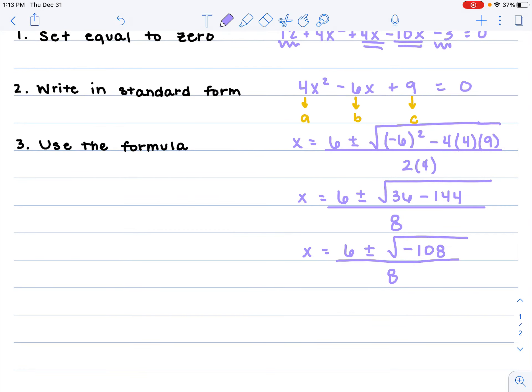Now we need to simplify that negative 108. So I'm going to bring that over here. Negative 108. Looking for the biggest perfect square that goes into -108. When I try all the perfect squares, 36 goes in there. It goes in 3 times. And we also have a negative, so we need to pull out that negative 1.